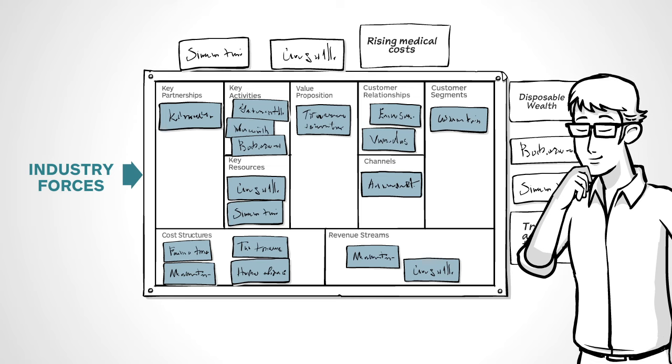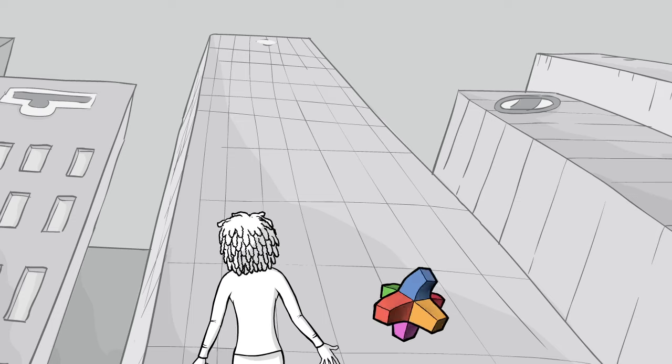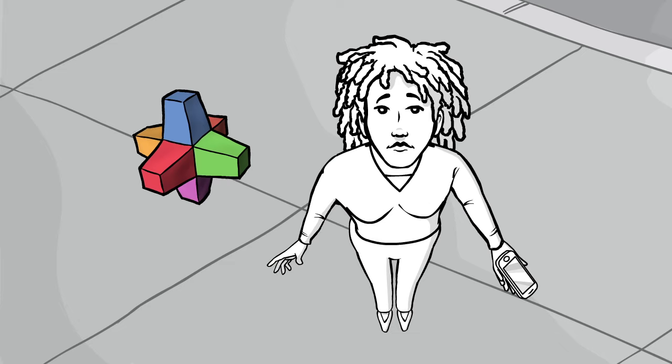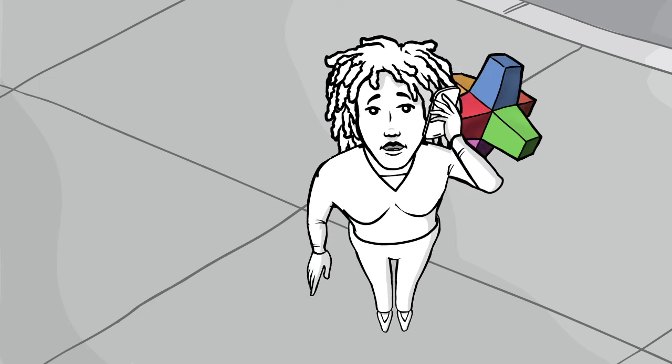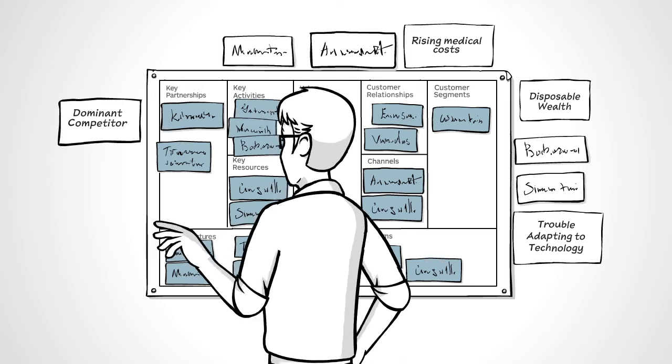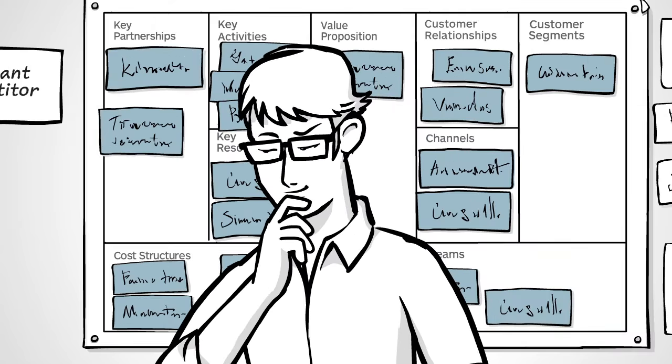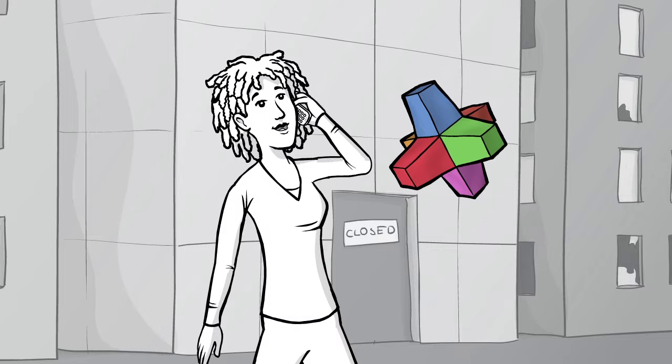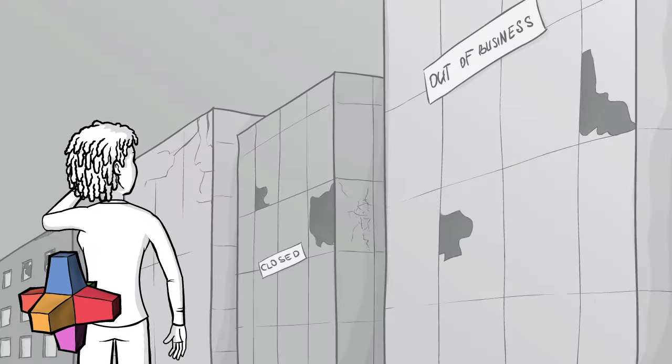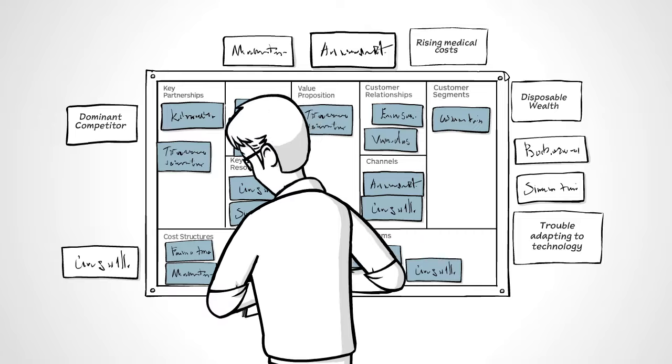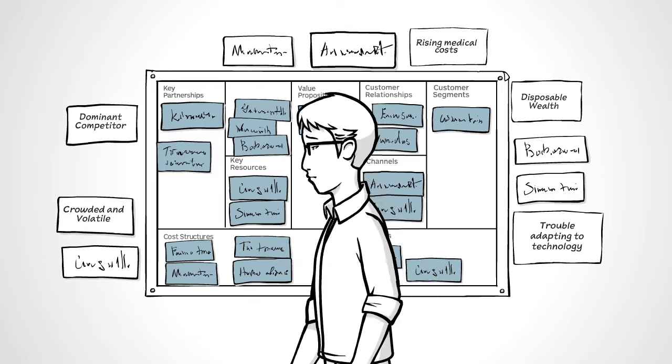Now to the left, map industry forces. Who are your main competitors? What advantages do their business models provide? Could they crush you? Your industry may already have a dominant competitor. But ask yourself, where are their weaknesses? Can you disrupt them? What might happen as suppliers and partners evolve or don't? Better to know now that the travel field is crowded and volatile. Right Carl?